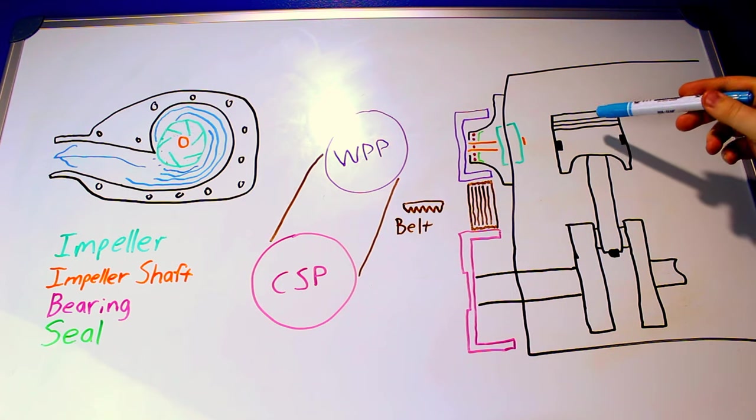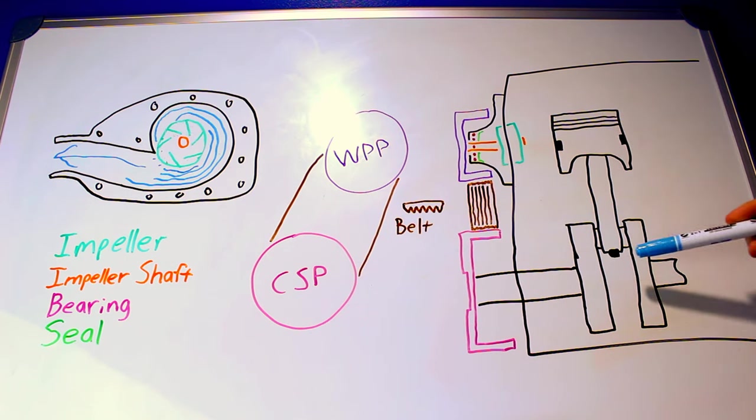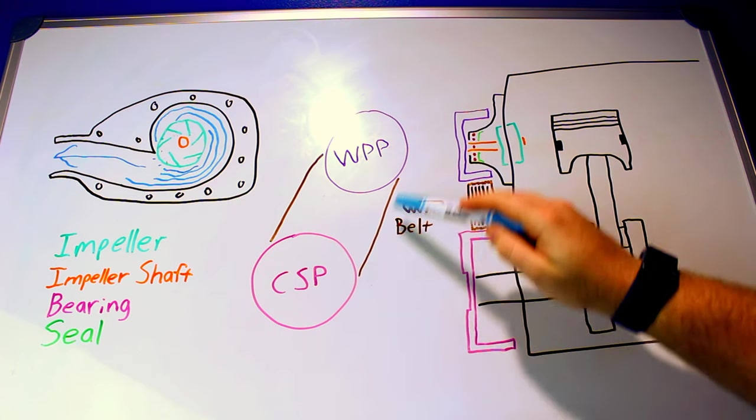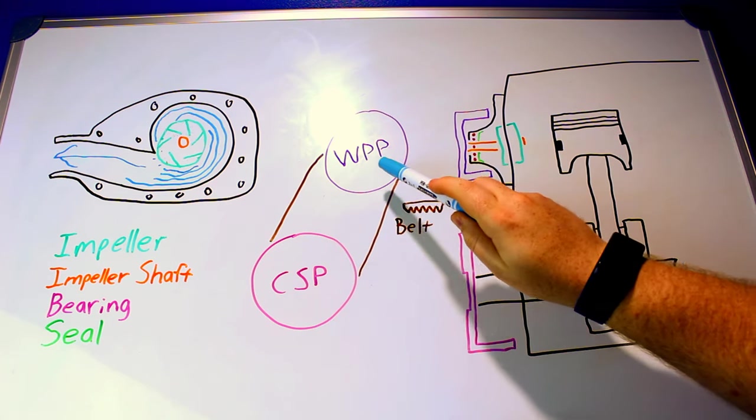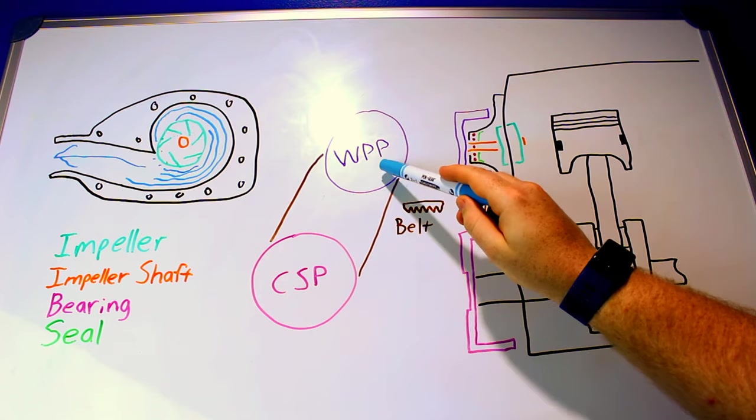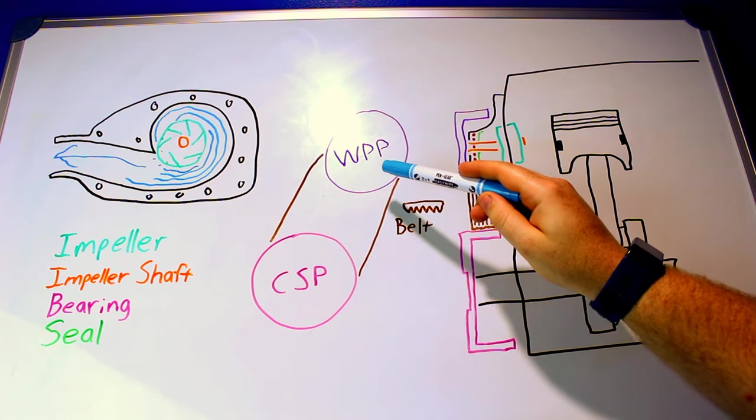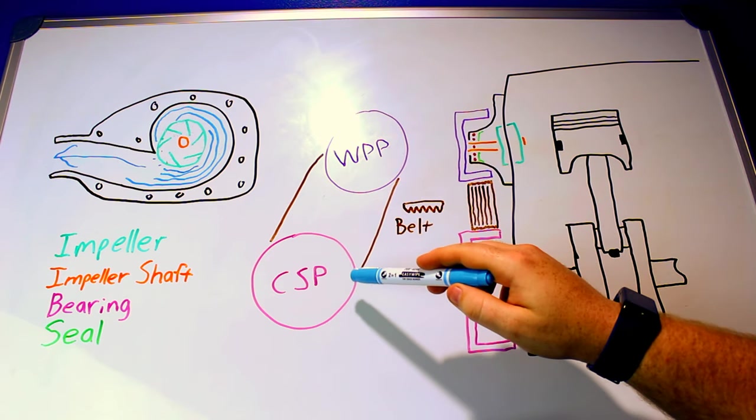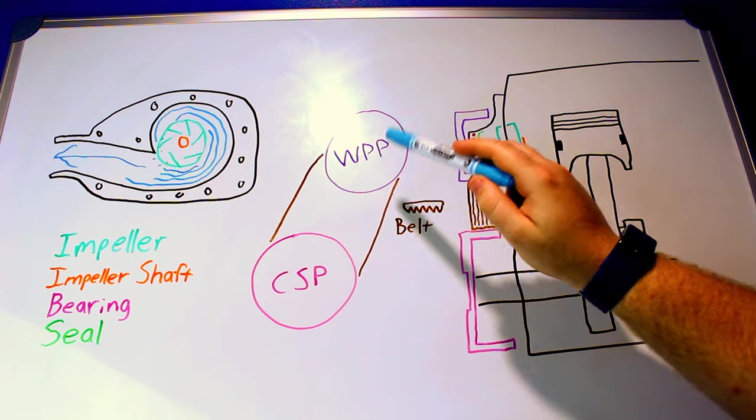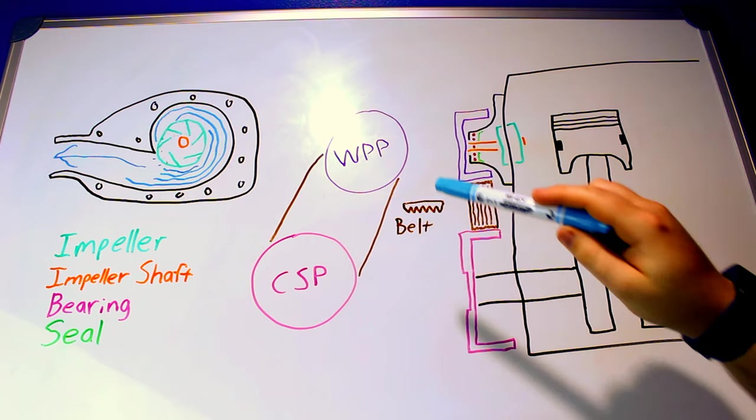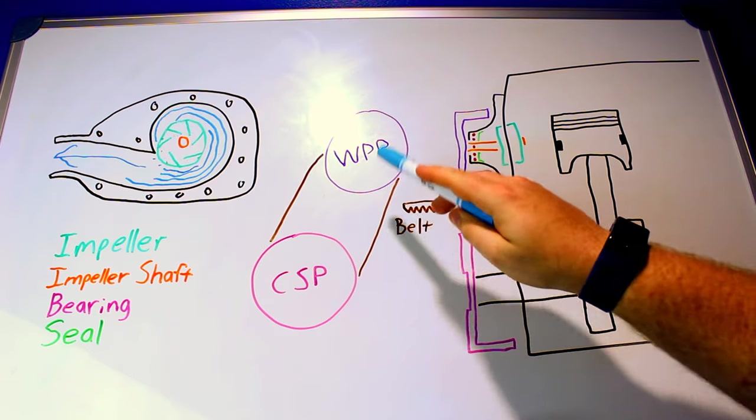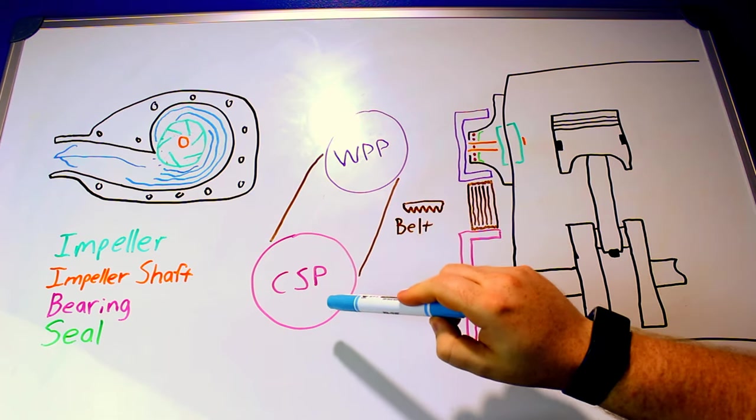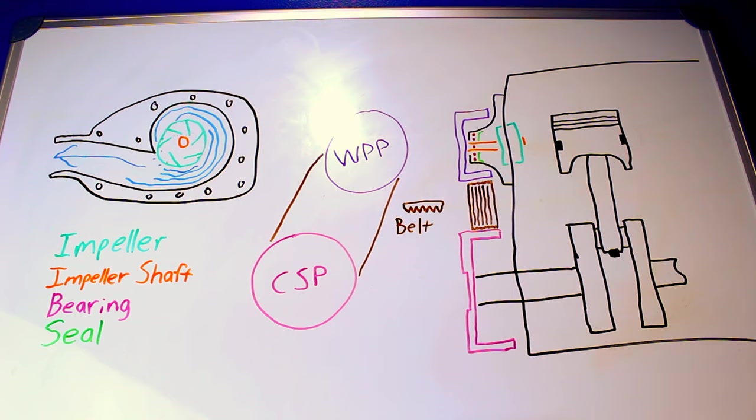But basically what's happening is the engine's running, the pistons going up and down turning the crankshaft. The crankshaft drives the crankshaft pulley and there's a belt around that pulley that goes to your water pump pulley. And if this and this are the same size that's a 1 to 1 ratio. If you make your water pump pulley half the size of your crankshaft pulley then every time your crankshaft turns one time your water pump is going to turn two times. And it works the other way too. If you make your water pump pulley twice the size of the crankshaft pulley then every two times you turn the crankshaft pulley the water pump is only going to turn once.